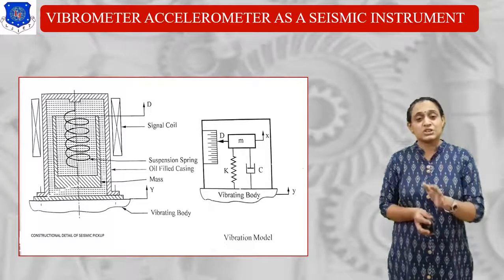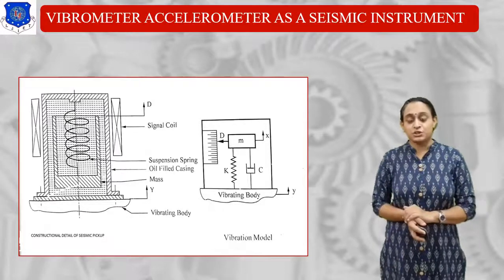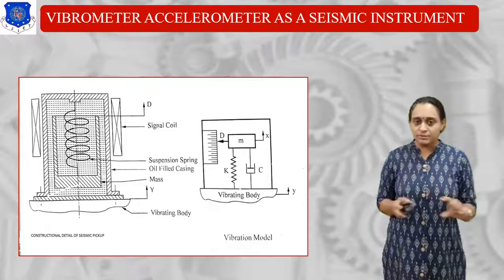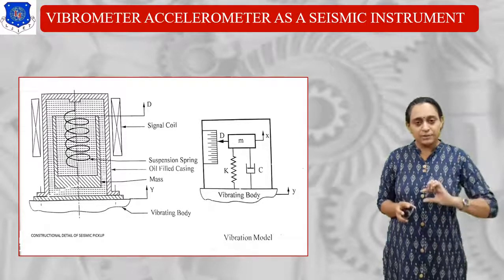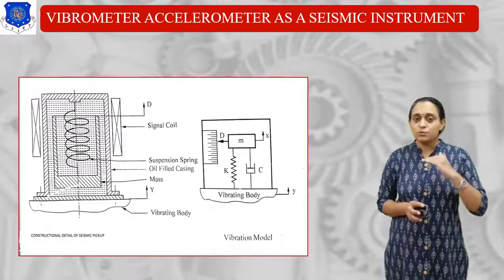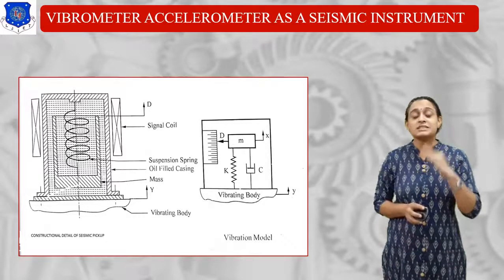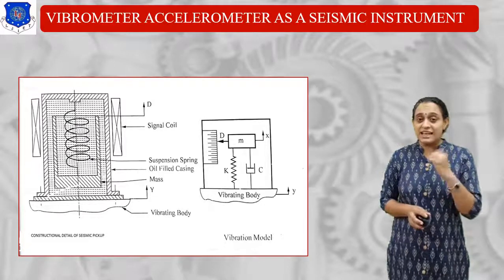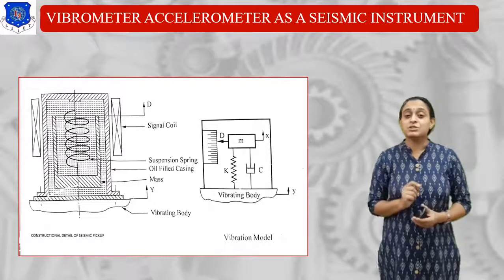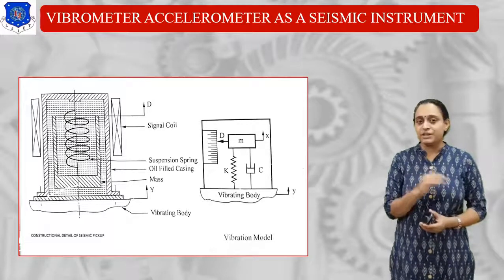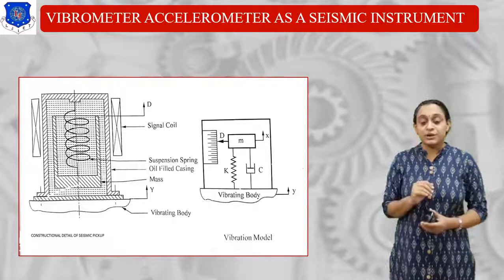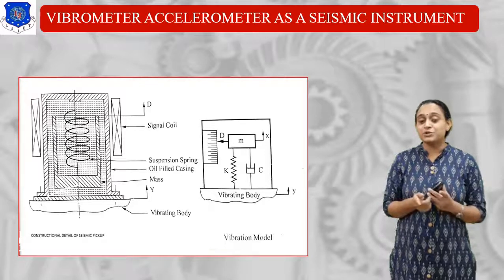This is the construction detail of a seismic pickup. Now we have another vibration model. There is a mass, and at the base there is the vibrating body. This vibrating body will vibrate up to some level. Because it is attached with a spring and damper, the mass will also move towards the upper or downward side. This mass is attached with a pen to the scale, and by that we can measure the vibration. The vibrating body will vibrate at the y amplitude and the mass will vibrate at the x amplitude — we can use the relative amplitude theory or base excitation theory to measure each amplitude.